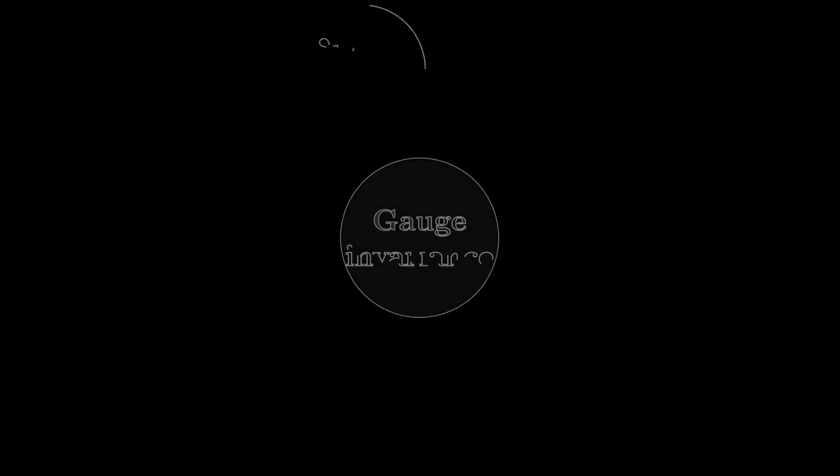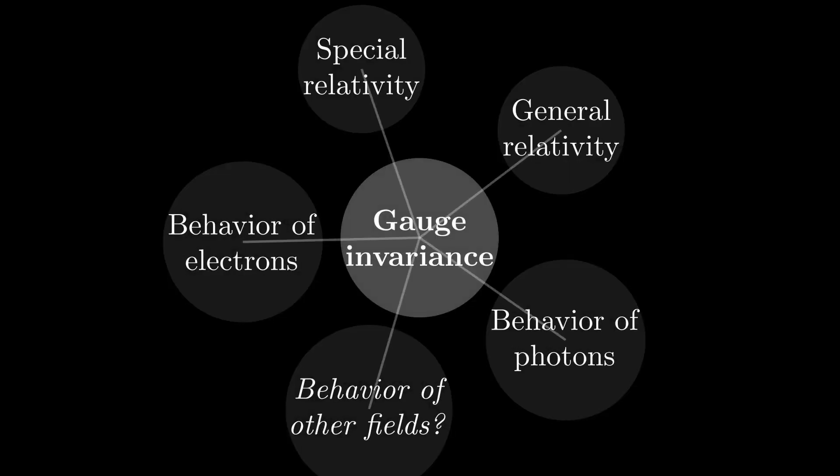As we've just seen, the 4-potential is able to generalize electrodynamics for relativity, but it can actually do much more. The quantization of this 4-vector field can tell us how its particles of energy behave, giving rise to the quantum field theory formulation of photons and electrons. And with just another generalization, it can describe the behavior of other quantum fields and particles as well.